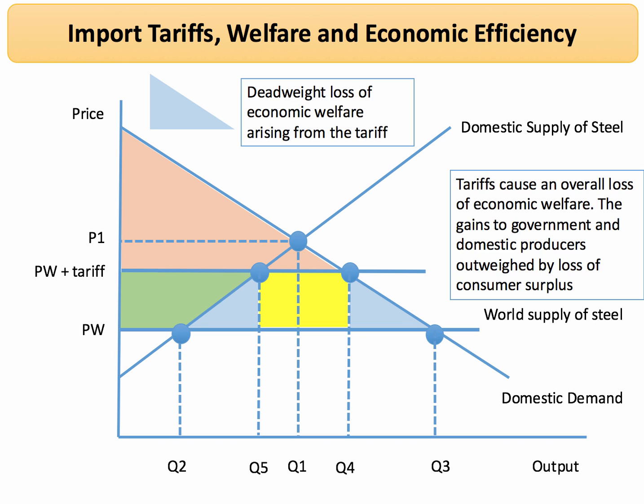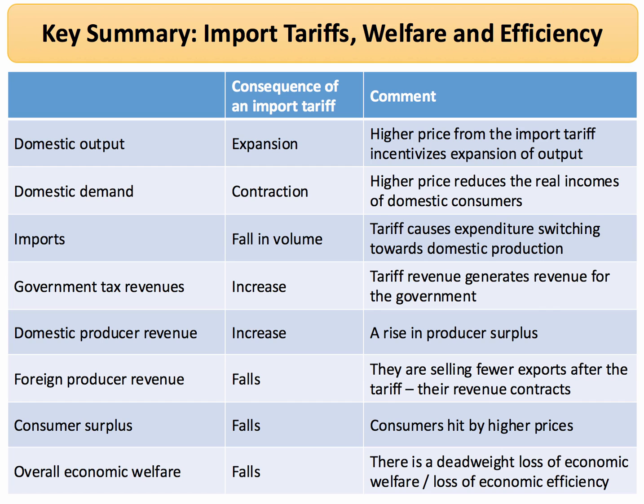Prices are inflated above what you would normally expect to see in a free trade competitive market. So in theory a tariff will lead to a deadweight loss of economic welfare — in other words, a loss of allocative efficiency. This is a useful table, either to print off or to pause on, as it takes us through the key summary of the effects of a tariff in terms of welfare and efficiency.